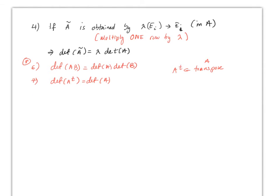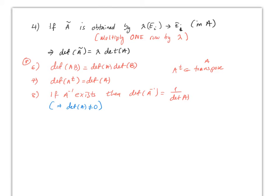Property 8: if A inverse exists — and remember it doesn't always exist — then det(A⁻¹) equals 1 over det(A). Recall that A inverse exists if and only if det(A) is not equal to zero. These two statements are equivalent.